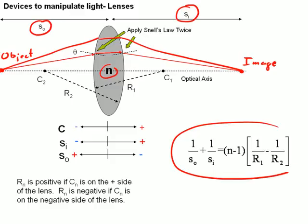I won't read that because that's in your book. But for a thin lens, this equation right here describes, for an object at distance SO, where the image is.